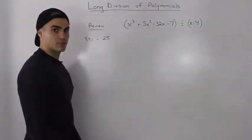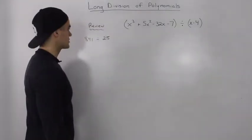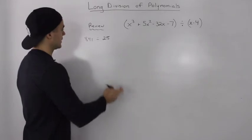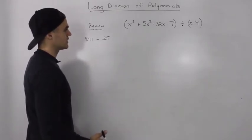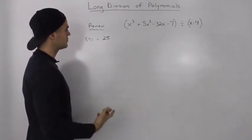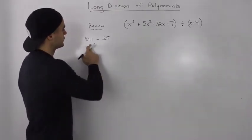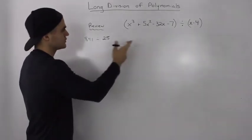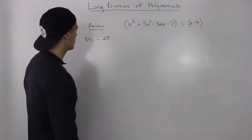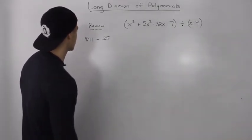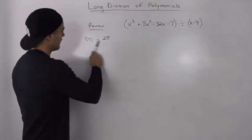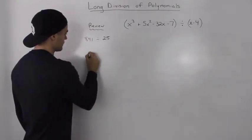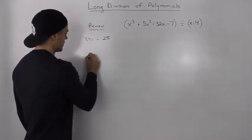Before we get into dividing polynomials, let's do a little review of long division with integers, because the process of doing long division with integers and polynomials is pretty much the same — it's very similar. So 841 divided by 25, we can rewrite the division like this.